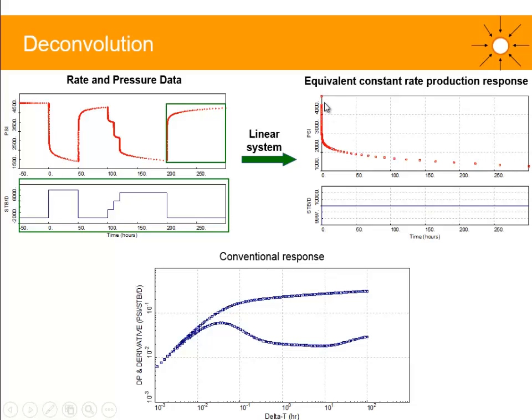From initial pressure, then we've got this pressure that decreases. This is the equivalent constant rate production response. Some well test programs don't show you the constant unit rate production response, but multiply it by the rate before the PBU. This is the equivalent initial drawdown. We've got only one single production period, and we've got pressure decreasing this way.